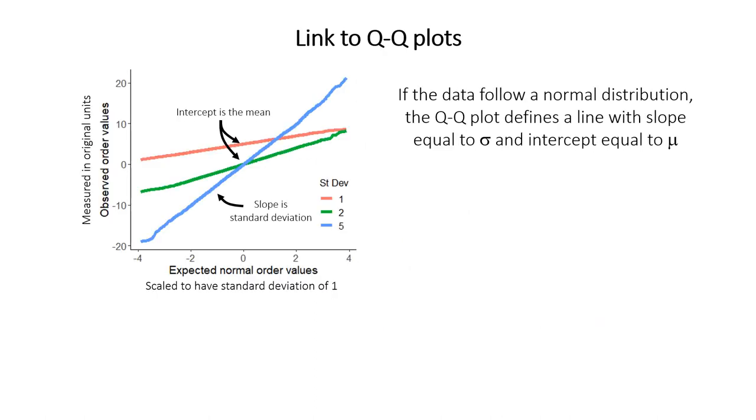Well, this is where we come back to QQ plots. So on a QQ plot, the expected normal order values that are on the x-axis represent a normal distribution with a mean of zero and a standard deviation of one.